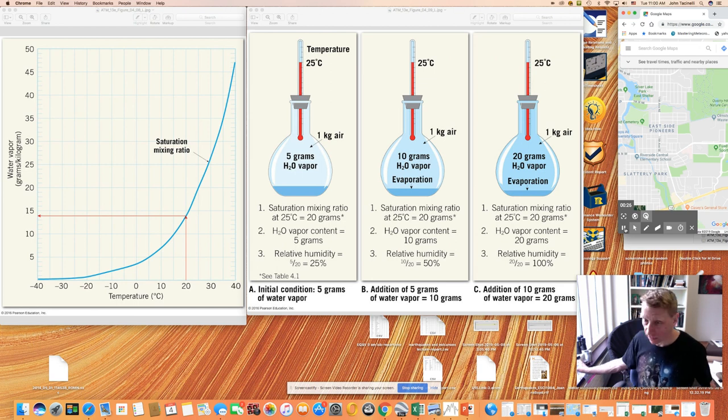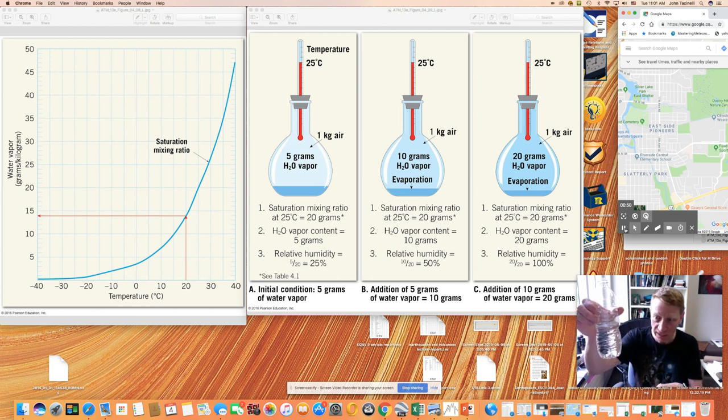So it's kind of like this bottle of water here. This bottle of water could hold a half liter, but it's only holding 250 milliliters. And so that means it's 50% full. So if the air is like the bottle and the water vapor content is like the water in the bottle here, then we would say this is at 50% relative humidity.